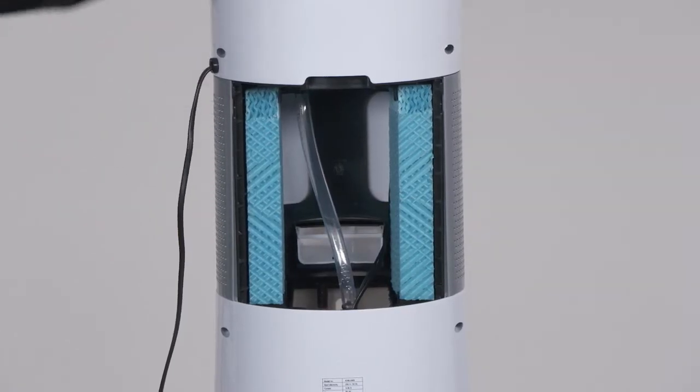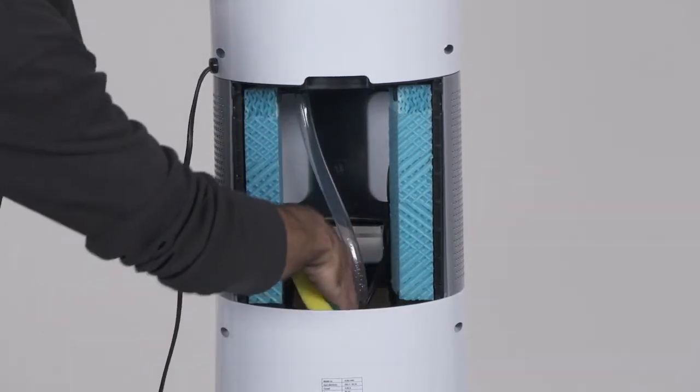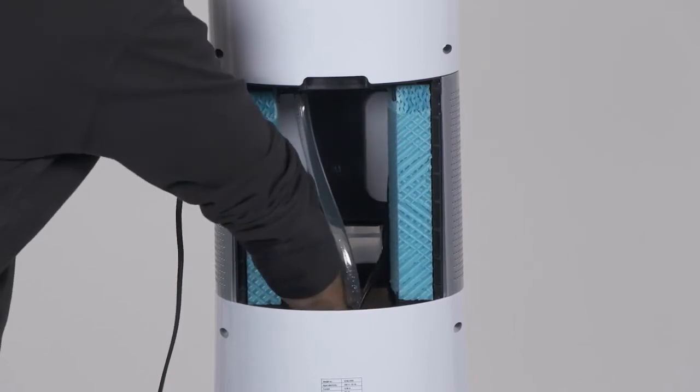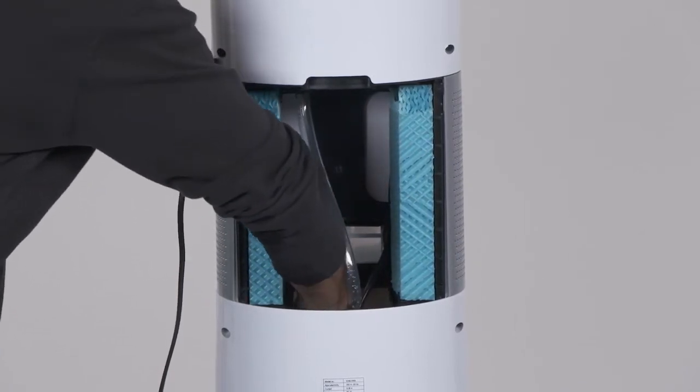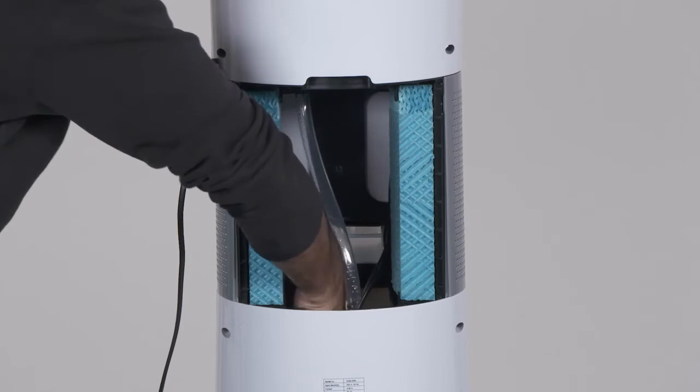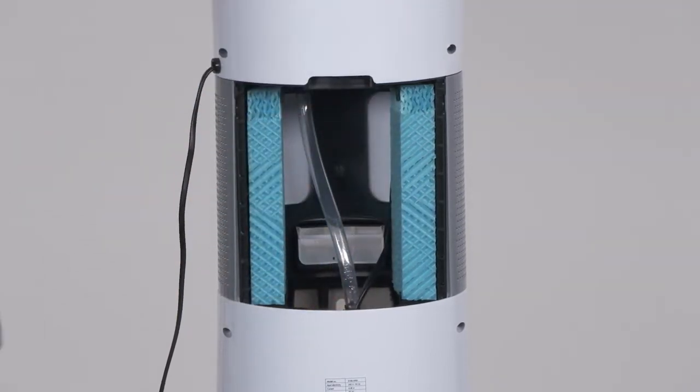Should you ever need to clean your reservoir, it can be accessed by removing the rear panel and reaching into the unit. The inside can be cleaned with a sponge or a cloth, but do not use soap as it will damage your sponges.